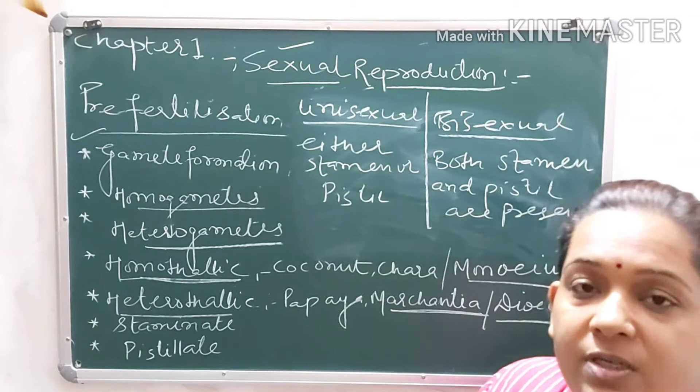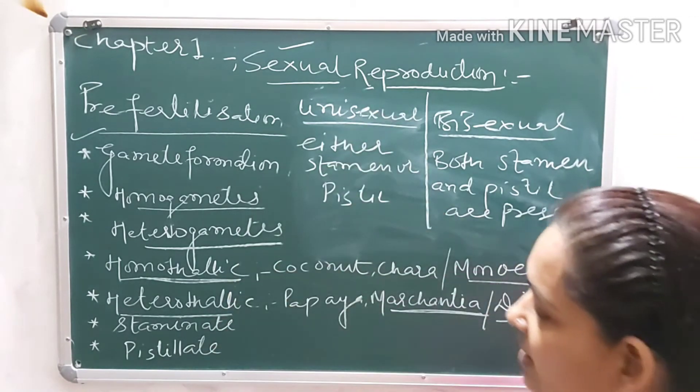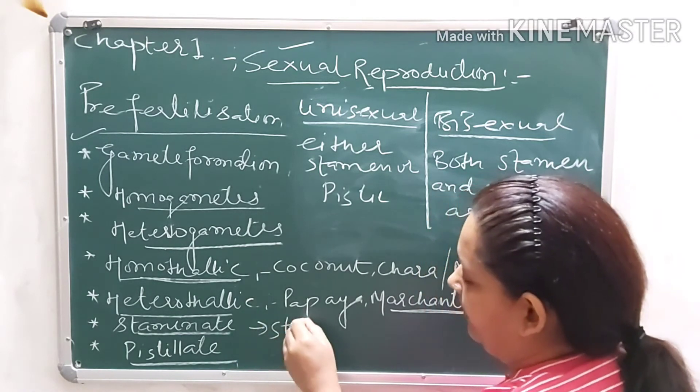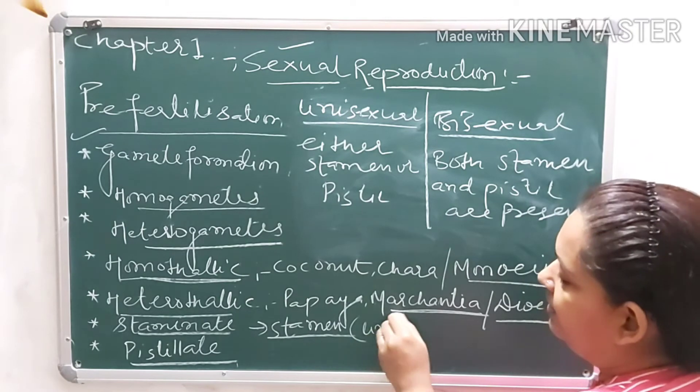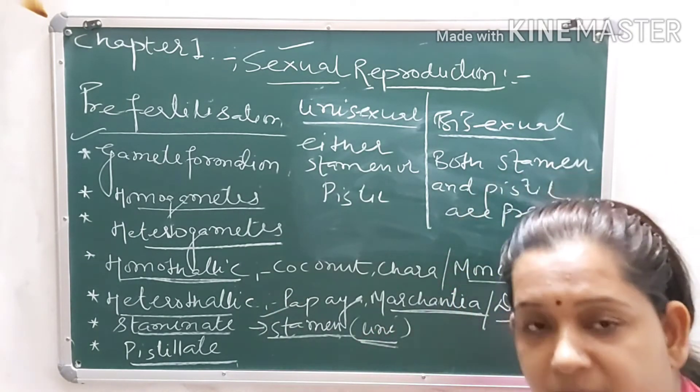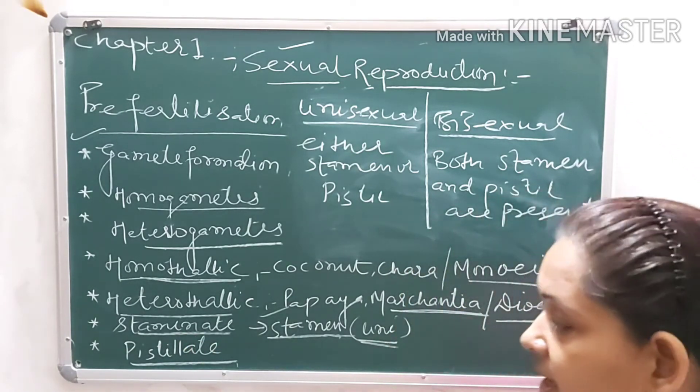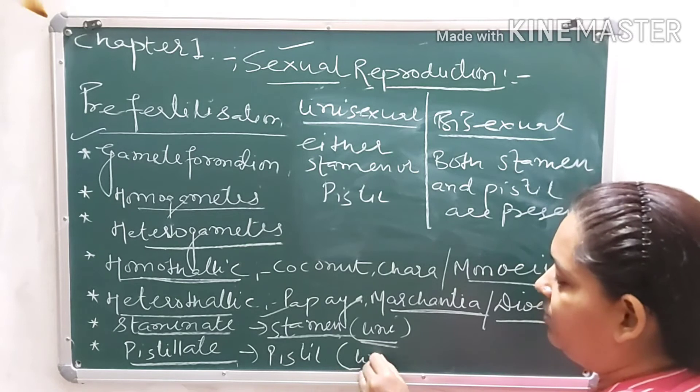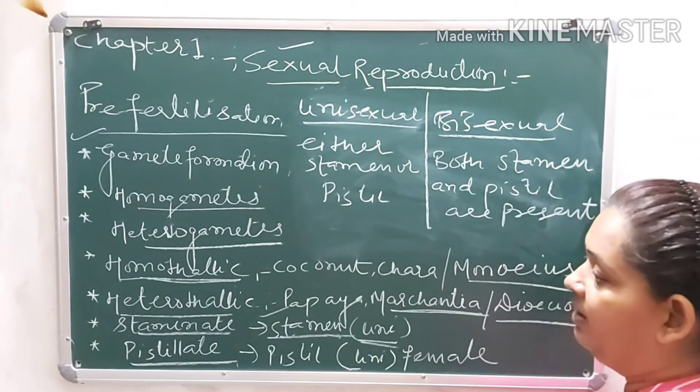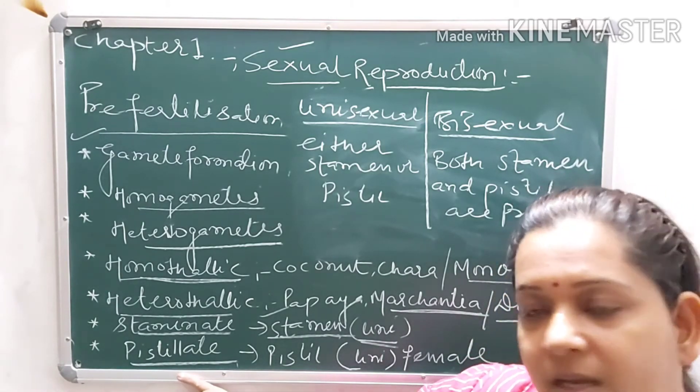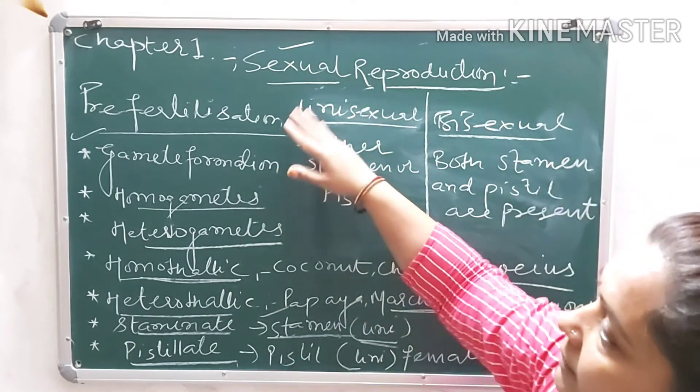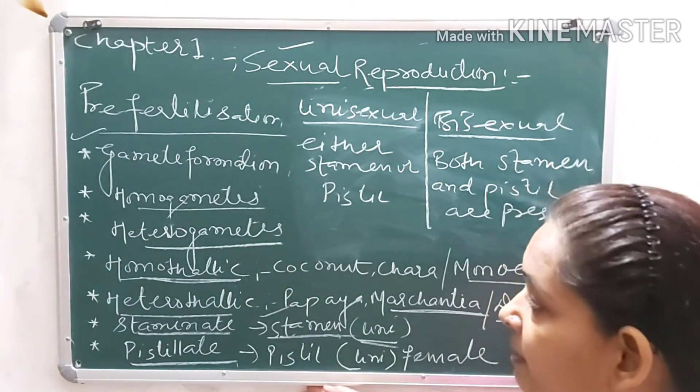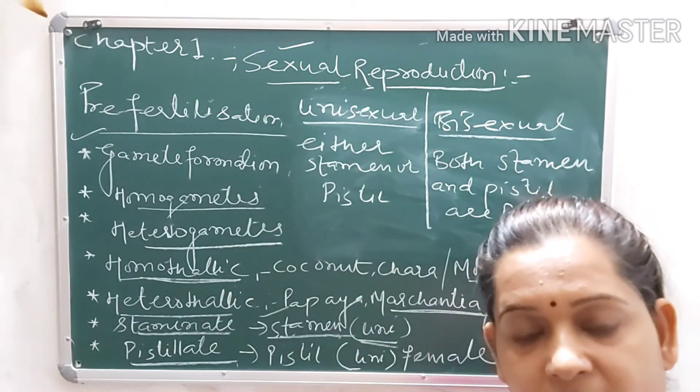From this the terms stamenate flower and pistilate flower are derived. The flower which has only stamen, only male reproductive part in unisexual flower, those are known as stamenate flowers. The flower that contains only pistil, the female reproductive part, that is called pistilate flower.